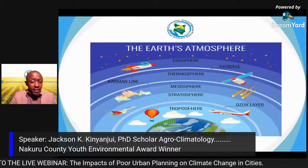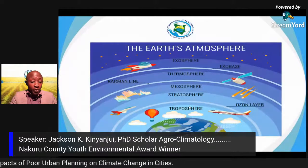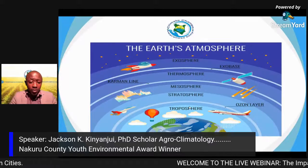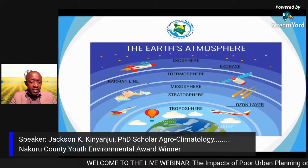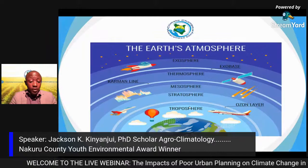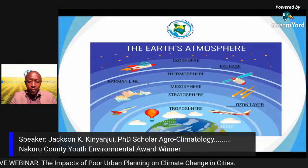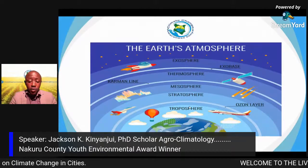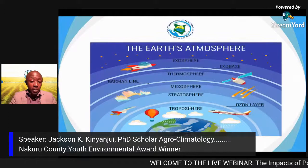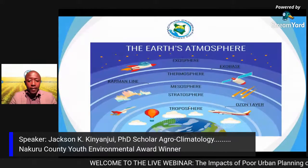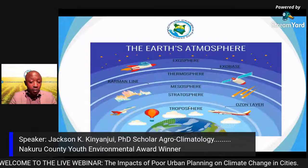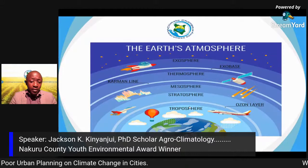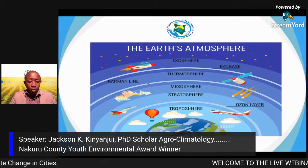The troposphere — 'tropo' meaning changing — is where all weather phenomena take place, including cloud formation. It extends from zero to 12 kilometers from the Earth's surface. The stratosphere, meaning 'layers,' is where the ozone layer is found. It is followed by the mesosphere, thermosphere, and finally the exosphere, all having different temperatures.